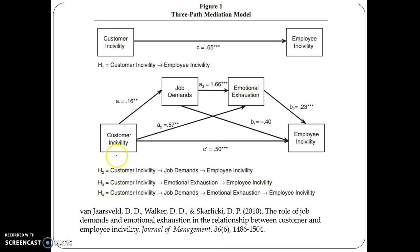In hypothesis 3, we have X, Y, and M2 — the hypothesis is that emotional exertion mediates the relationship between customer incivility and employee incivility. Then the final hypothesis, which is what we are most interested in: job demand and emotional exertion both are serially mediating the relationship between customer incivility and employee incivility. In practical sense, customer incivility influences job demand, which in turn influences emotional exertion, which finally results in employee incivility.